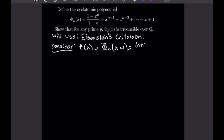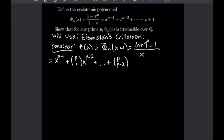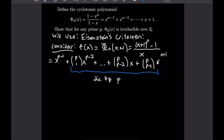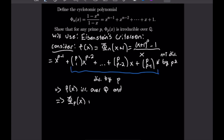Once we plug that in, we get (x+1)^p − 1 all over x, which equals x^(p−1) + p choose 1 · x^(p−2) + … + p choose (p−2) · x + p choose (p−1). This series expansion fits all the criteria for Eisenstein's criterion: all intermediate terms are divisible by p, and the last term is not divisible by p². So by Eisenstein's criterion, f(x) is irreducible over Q, meaning the cyclotomic polynomial evaluated at any prime is irreducible over the rationals.